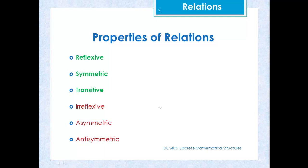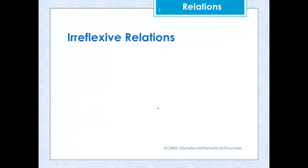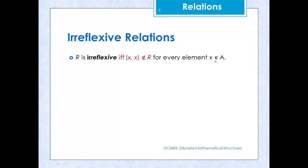Let us start with today's first property: irreflexive relation. In order for a relation R to be irreflexive, we should not have any ordered pair of type (x, x) belonging to R for all elements x belonging to A. In other words, there should be no reflexive ordered pair present in that particular relation R.